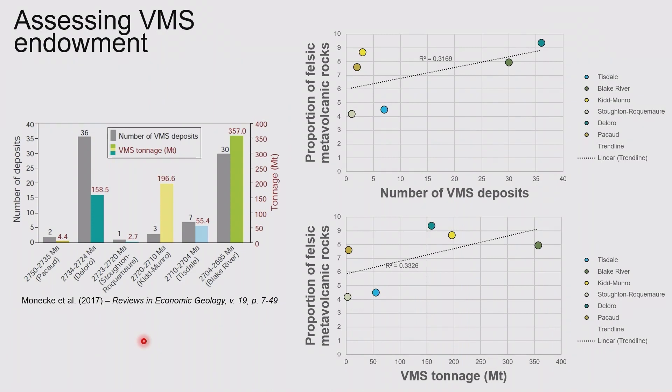The first thing I was doing was trying to plot these felsic proportions against the number of deposits and tonnage. I'm probably not going to convince anybody that there's a strong correlation here. But you can do that with some of the other rock types too, like the ultramafic, and that fails completely. But at least here you can see that there might be some relationship.